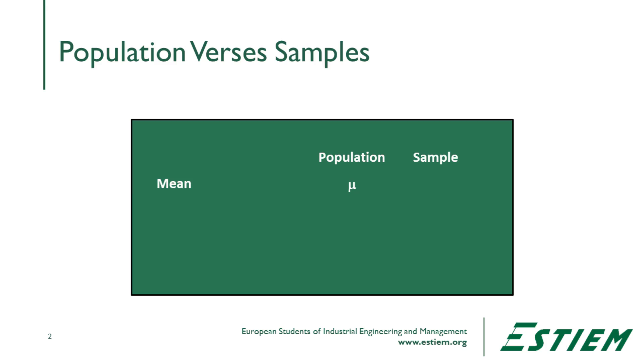What's the difference between a population and a sample? When statisticians talk about population, they talk about population parameters: the parameter of the mean, which is the Greek letter mu — a measure of location — and standard deviation, or sigma, which is a measure of dispersion. They also talk about the number of members in a population, using capital N to denote population size.